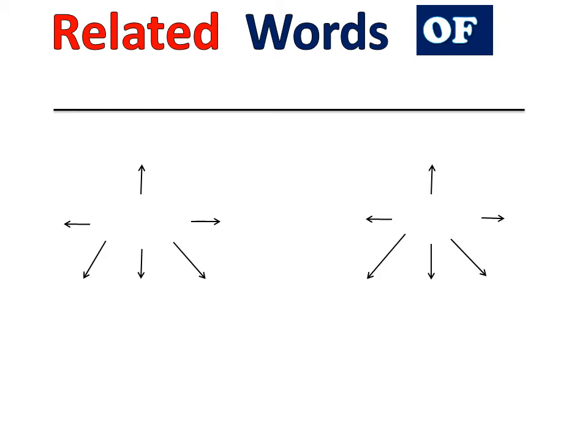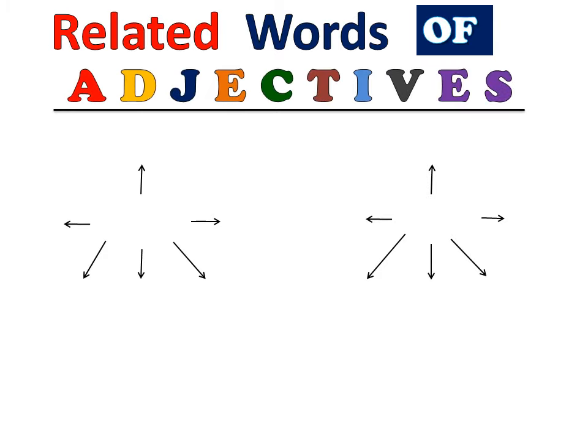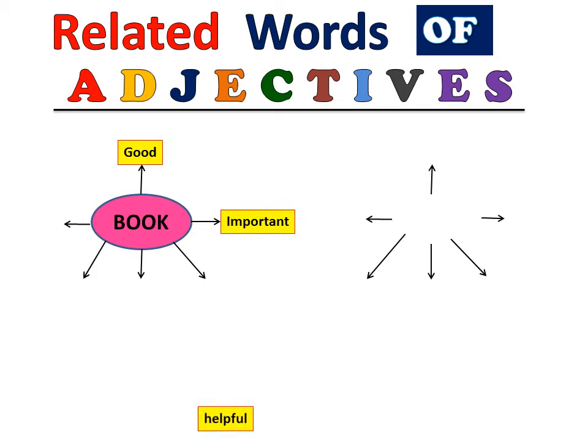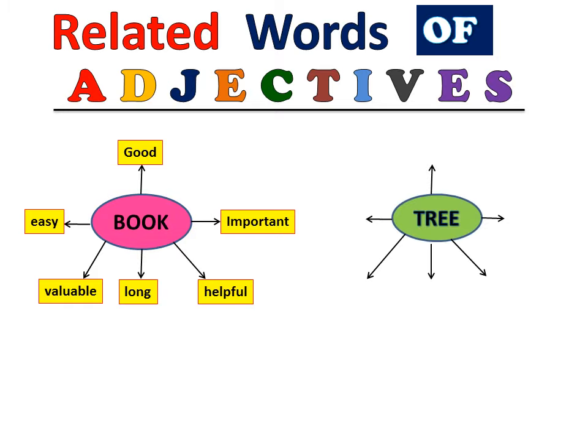Now let's see related words of adjectives. In this, we will learn how to write all adjectives related to a noun. For example, book. Book means book, this is a noun. We write adjectives related to that noun, that means its related words, which are connected adjectives. Which adjectives are related to book? Good, important, helpful, long, valuable, easy.